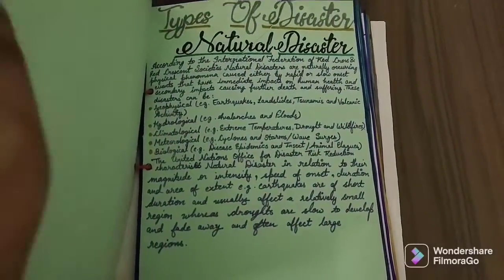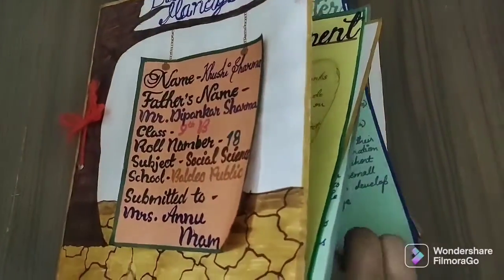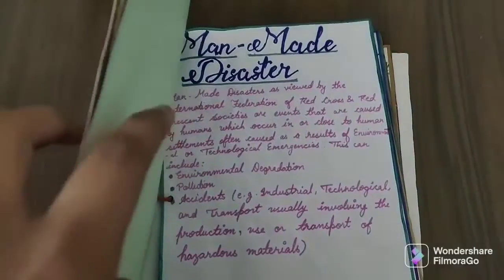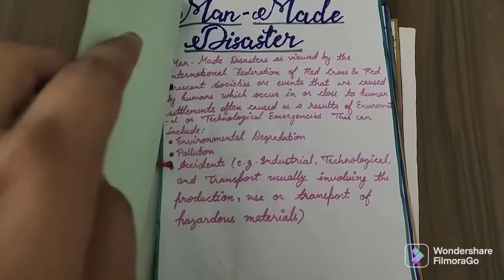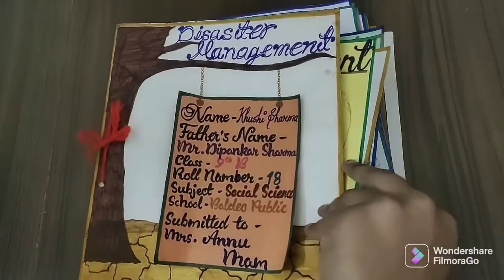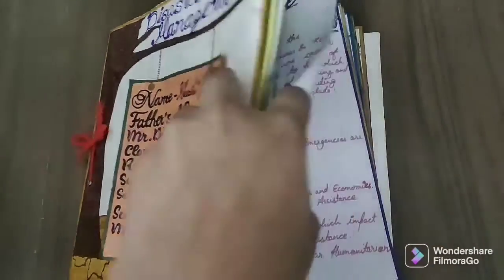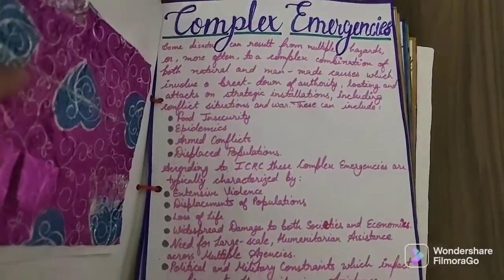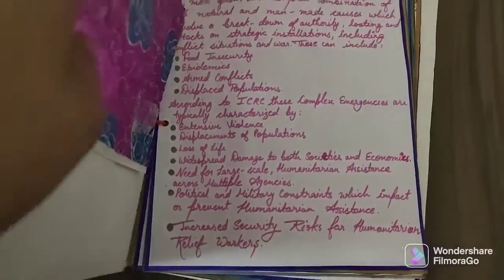Now it's the types of disaster section. The first heading is natural disaster, and you have to write briefly about it. Then there is manmade disaster, and this is followed by complex emergencies.